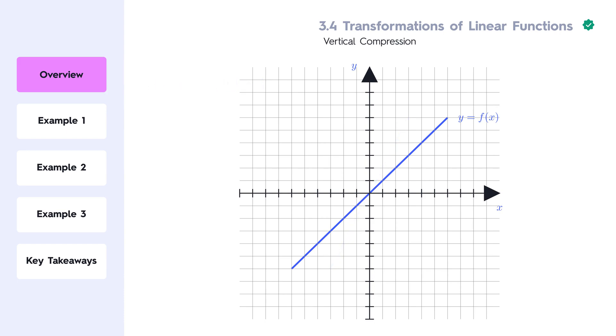Vertical compression: When we multiply the function by a constant a, the line becomes flatter if the value of a is between 0 and 1.